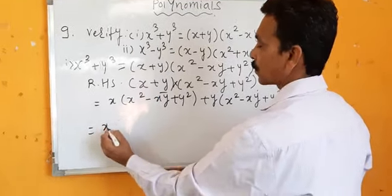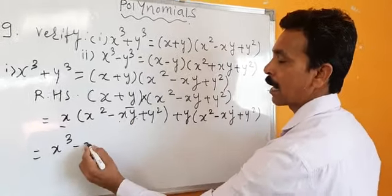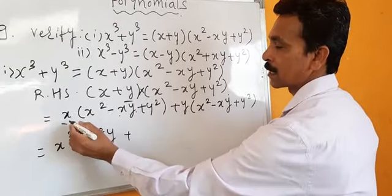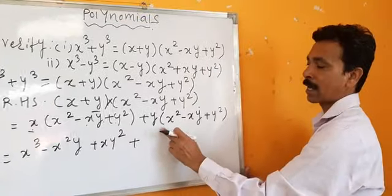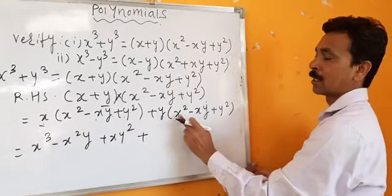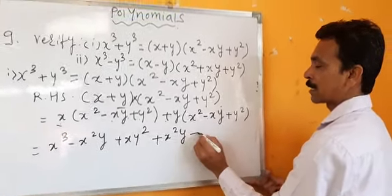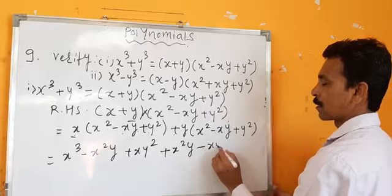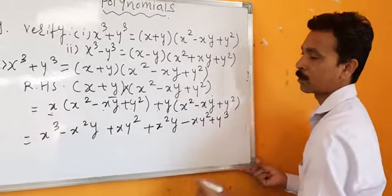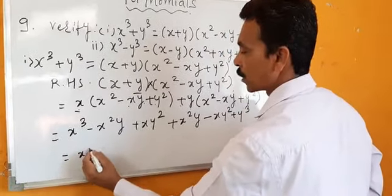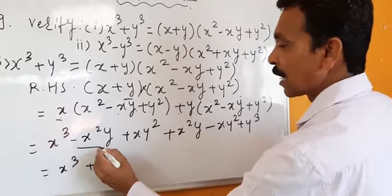Opening the brackets: x into x squared = x cube. x into minus xy = minus x squared y. x into y squared = xy squared. Then y into x squared = x squared y. Plus into minus = minus, so y into xy = minus xy squared. y into y squared = y cube.